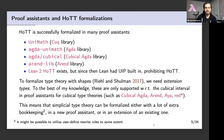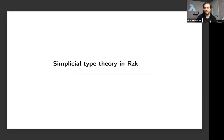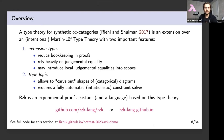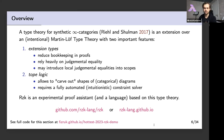That is the context. If there are no questions, I will go into the little tutorial in simplicial type theory. The type theory for synthetic infinity categories is an extension of Martin-Löf type theory with two important features: extension types and tope logic. More generally, this is about type theory with shapes, but for this talk we're only looking at specific shapes generated from the directed interval.